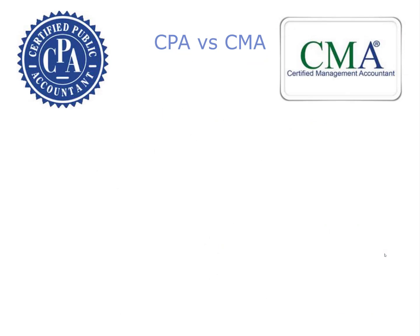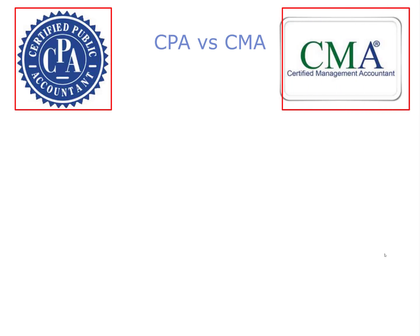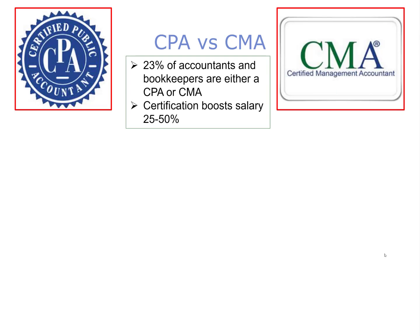Now let's compare and contrast CPAs, Certified Public Accountants, with CMAs, Certified Management Accountants. Approximately 23% of accountants and bookkeepers have passed certification tests to become either a CPA or CMA. These licenses show potential employers that the job candidate is knowledgeable about certain areas of accounting, and becoming certified could boost your salary anywhere from 28% to 50%.